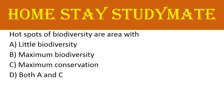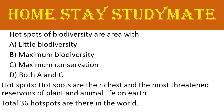Next: hotspots of biodiversity are areas with — options are little biodiversity, maximum biodiversity, maximum conservation, or both A and C. Hotspots are the richest and most threatened reservoirs of plant and animal life on Earth. There are a total of 36 hotspots in the world. The right answer is maximum biodiversity.